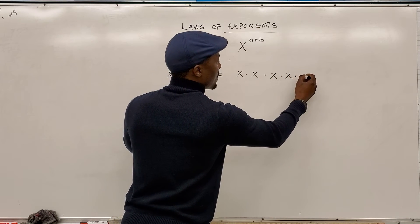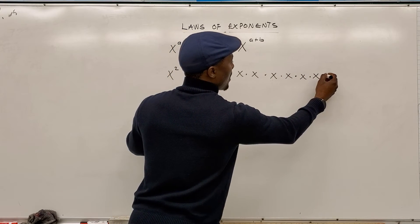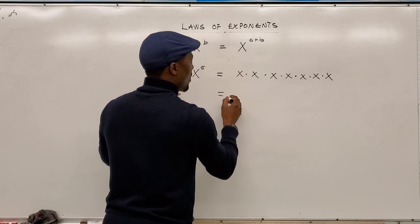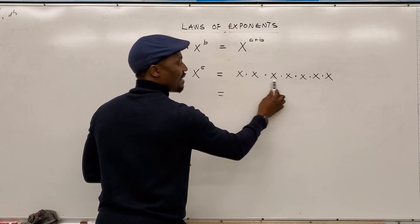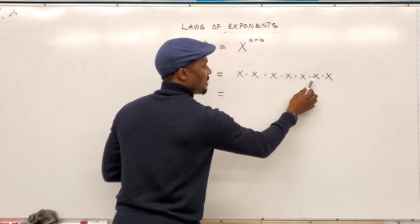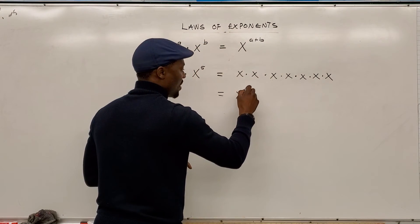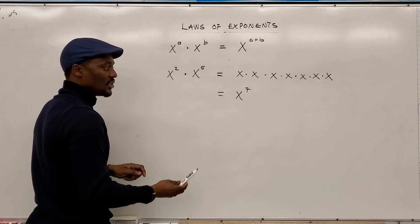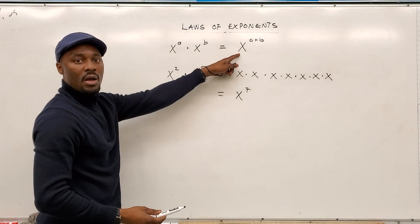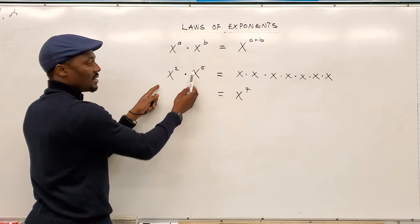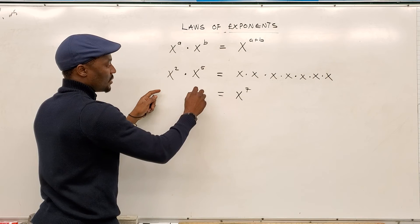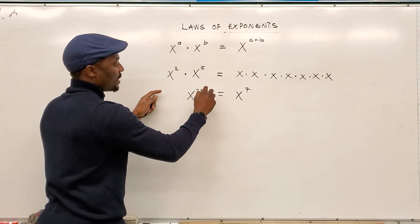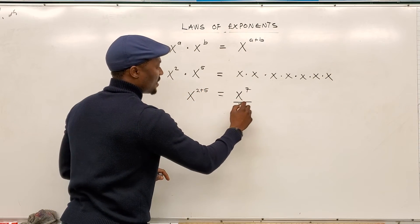One, two, three, four, five. What you have ultimately will be x in seven places. One, two, three, four, five, six, seven. So, that's x to the power of seven, which has justified this law, which means you just add the powers. x to the power of two plus five is x to the seventh power.